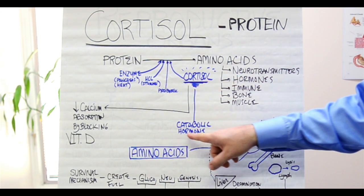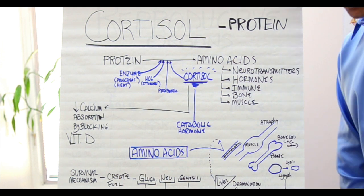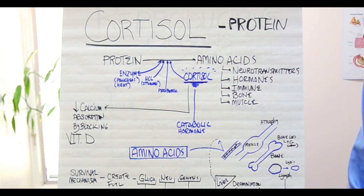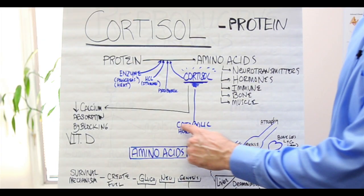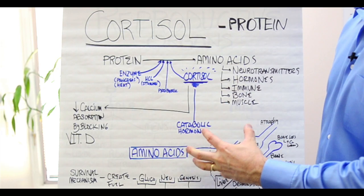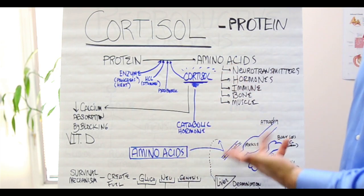Cortisol creates a catabolic effect. Comes from the word cannibalistic. Cannibal eats flesh. Catabolic hormones break down things. They break down muscle protein.